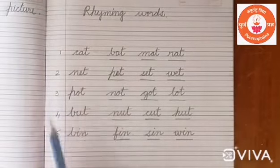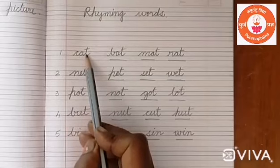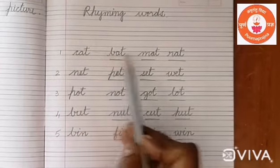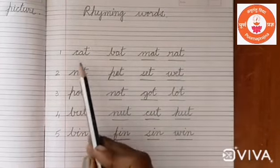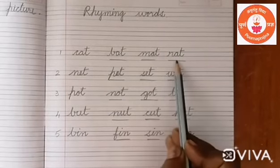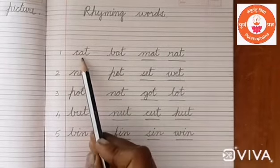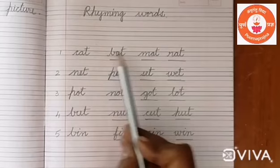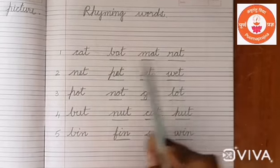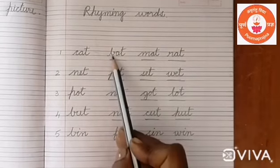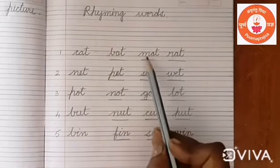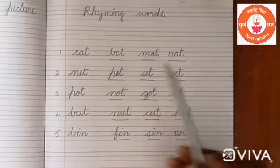Number one: cat. Now we have to write rhyming words for cat — cat, bat, mat, rat. See? We have changed only the beginning sounds. 'At', 'at', 'at' — and only the beginning sounds are different: b, m, r. Okay?